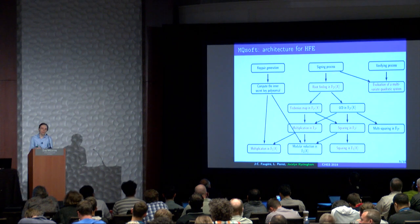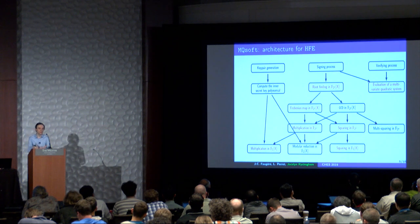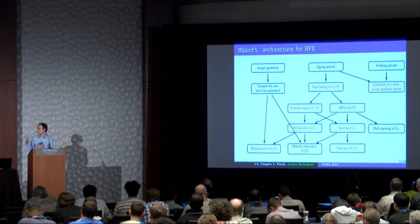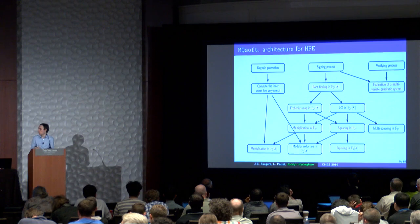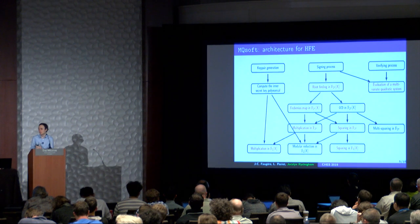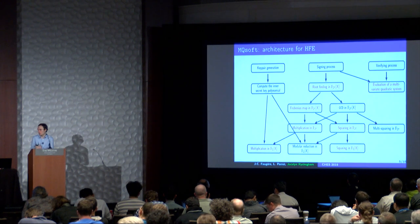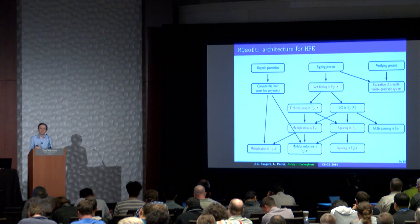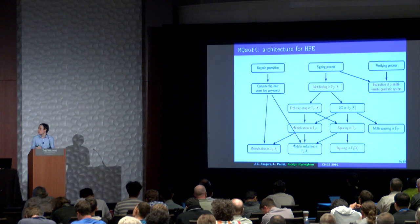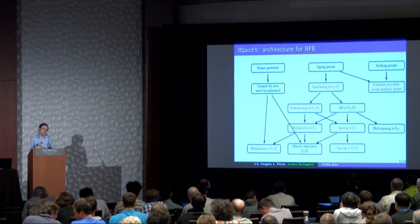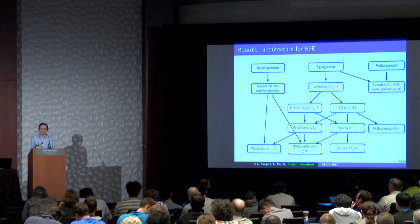Here we have an example of the architecture of our library for HFE schemes. We have three cryptographic operations: key generation, signing, and verifying. In red, we have the part covered in this talk. For key generation, we need to generate the secret multivariate systems, and for this we need polynomial multiplication in GF(2)[X] — this is a crucial part of key generation. For the signing process, we need root finding in a univariate polynomial, and for this we need arithmetic — multiplication and squaring in GF(2^N) — but also arithmetic in GF(2)[X]. The multiplication and squaring are crucial parts.